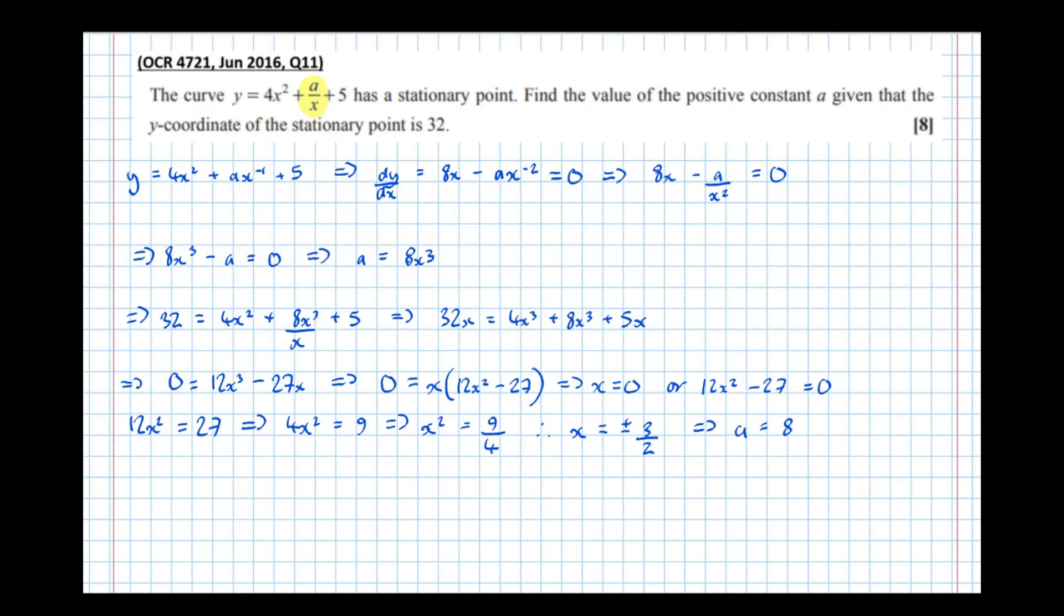A = 8x³, and if x is ±3/2, it's told me that a is a positive constant. So now I get the positive value, and I need to sub in the positive 3/2.